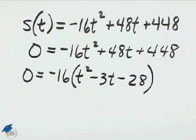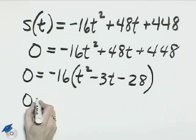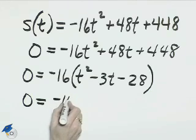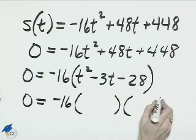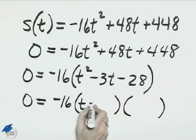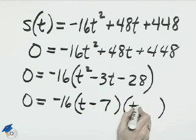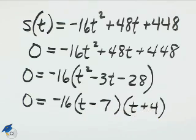And now we should be able to factor this further. Zero equals negative 16, the quantity t minus 7 and t plus 4 is how that will factor.